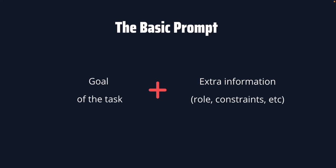The basic prompt consists of two elements. First, we have the goal of the task — the main goal of what you want to accomplish. For example, if you want to create an article about how to learn a programming language, that's the goal: 'Create an article on how to learn a programming language.' The second element is extra information, which can be a role, constraints, and so on.